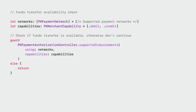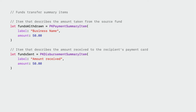Now let's take a look at how to implement it within your app. We first need to determine which networks and card capabilities we wish to support. Next, we'll check to see whether the user has an eligible card to initiate a funds transfer. This is done through PKPaymentAuthorizationController. Using the supportsDisbursements method, we provide the networks and card capabilities defined earlier. You can use the results of this check to adjust your user interface as appropriate.